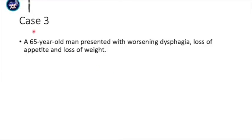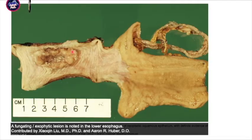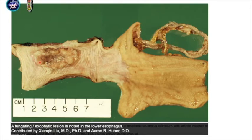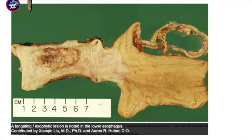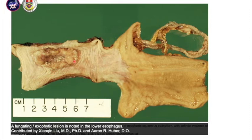The third case is a 65-year-old gentleman presenting with worsening dysphagia, loss of appetite, and loss of weight. Grossly, there is a fungating exophytic lesion at the lower esophagus at the gastroesophageal junction. Fungating means it looks like a lot of fungal growth clumped together irregularly, and exophytic means it is protruding outward.